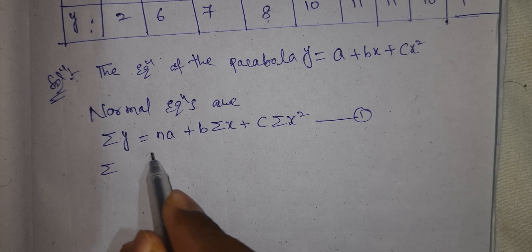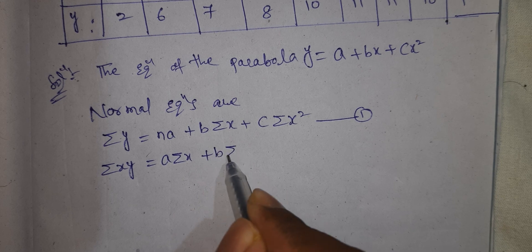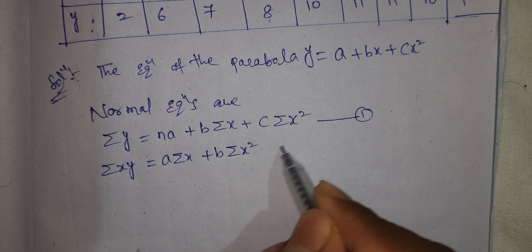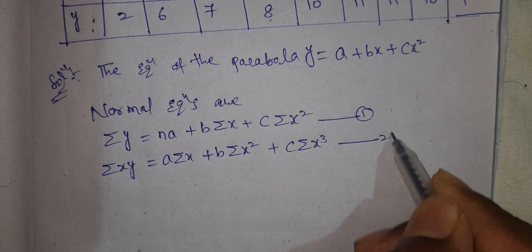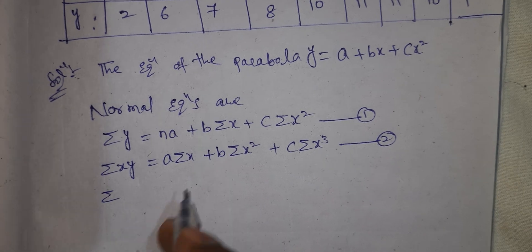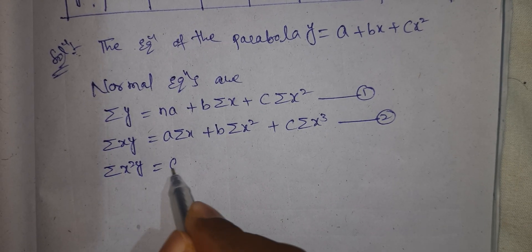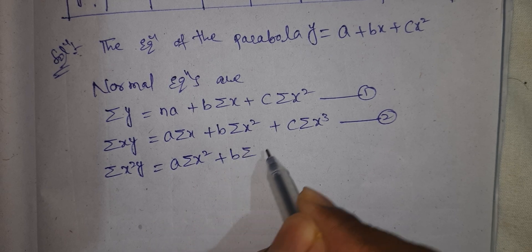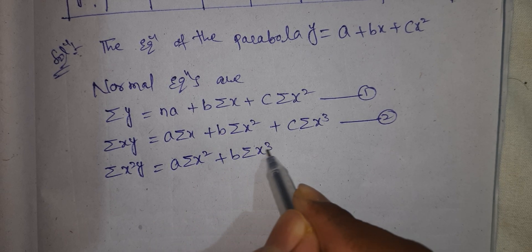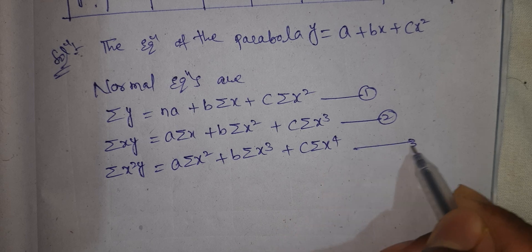Next, equation number 2: summation xy equal to a times summation x, plus b times summation x squared, plus c times summation x cubed. Equation number 3: summation x squared y equal to a times summation x squared, plus b times summation x cubed, plus c times summation x to the power 4.